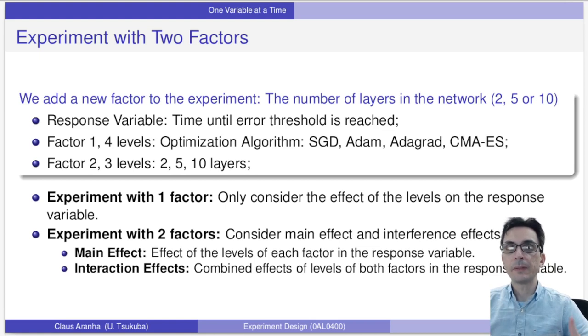So now we have a different experiment. An experiment with one factor only considers the effects on the level of the response variable. But now we have an experiment with two factors. We want to consider not only the effects of the levels, like how does Adam affect my response variable, but we also want to consider the interaction effects, which are the combined effects of levels. For example, maybe Adam is good for low number of layers but bad for high number of layers. Now the levels of these factors interact and the changes in our response variable become more complicated.